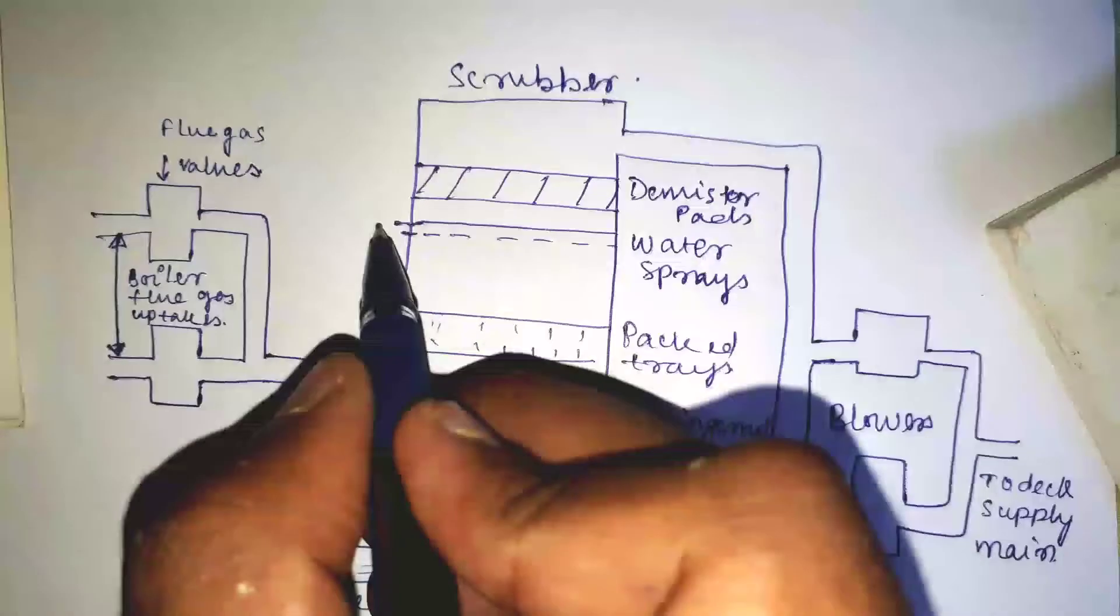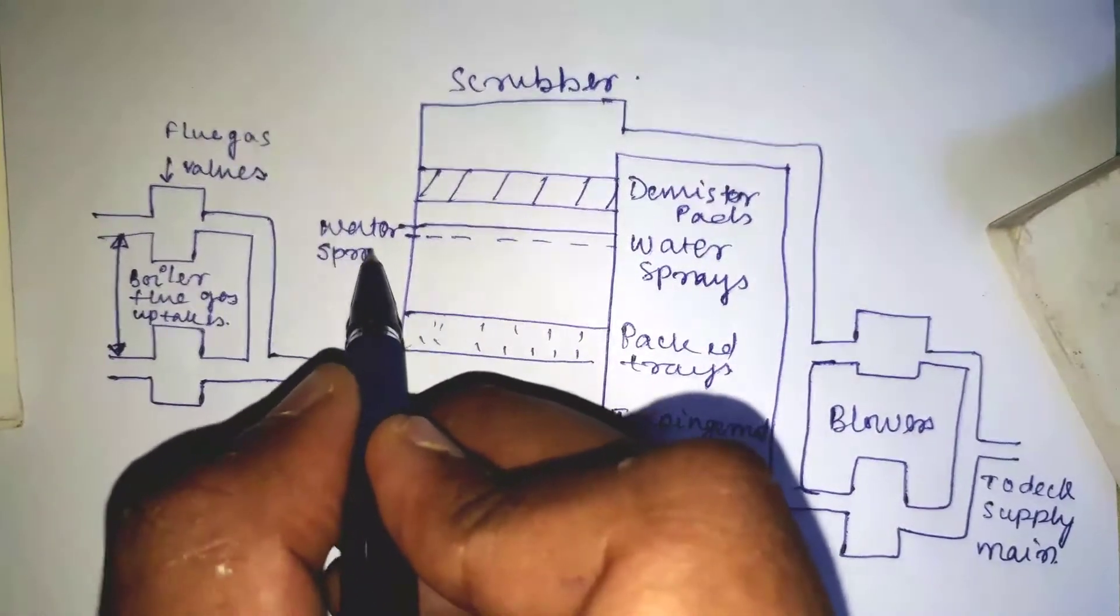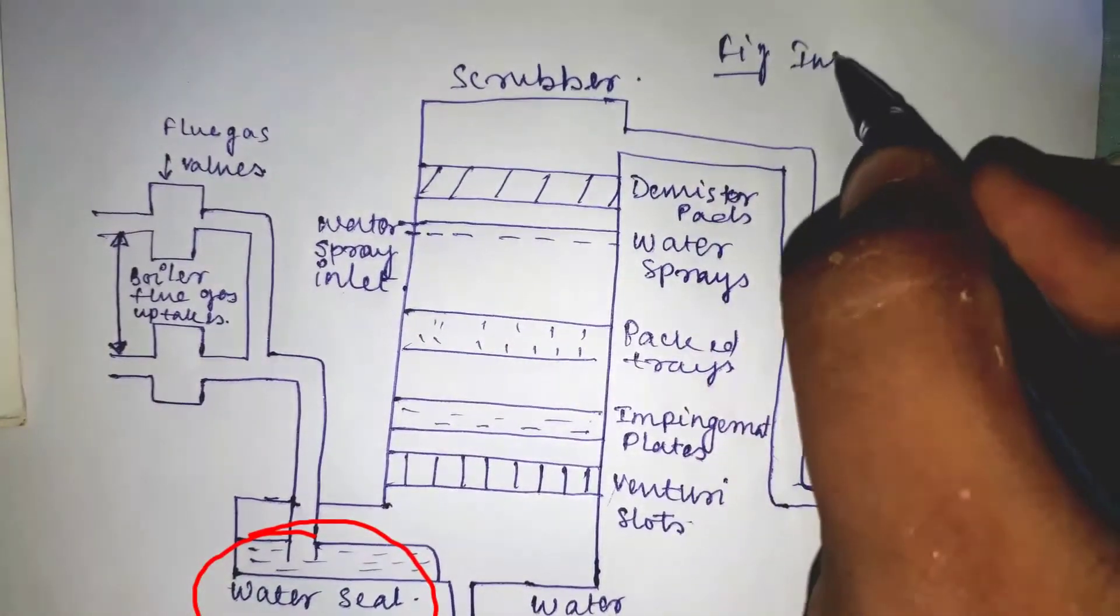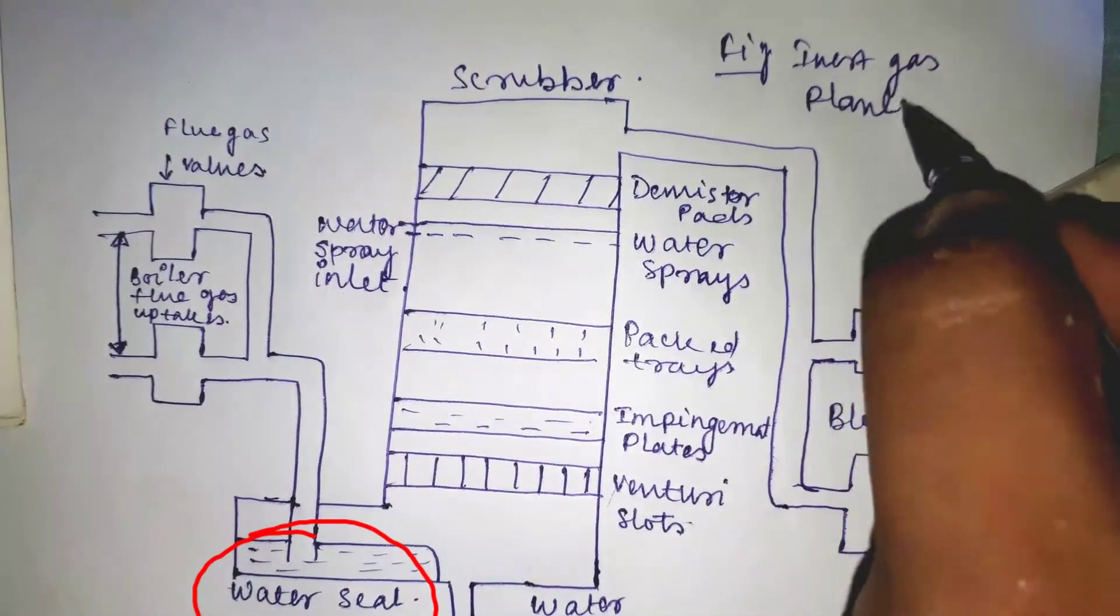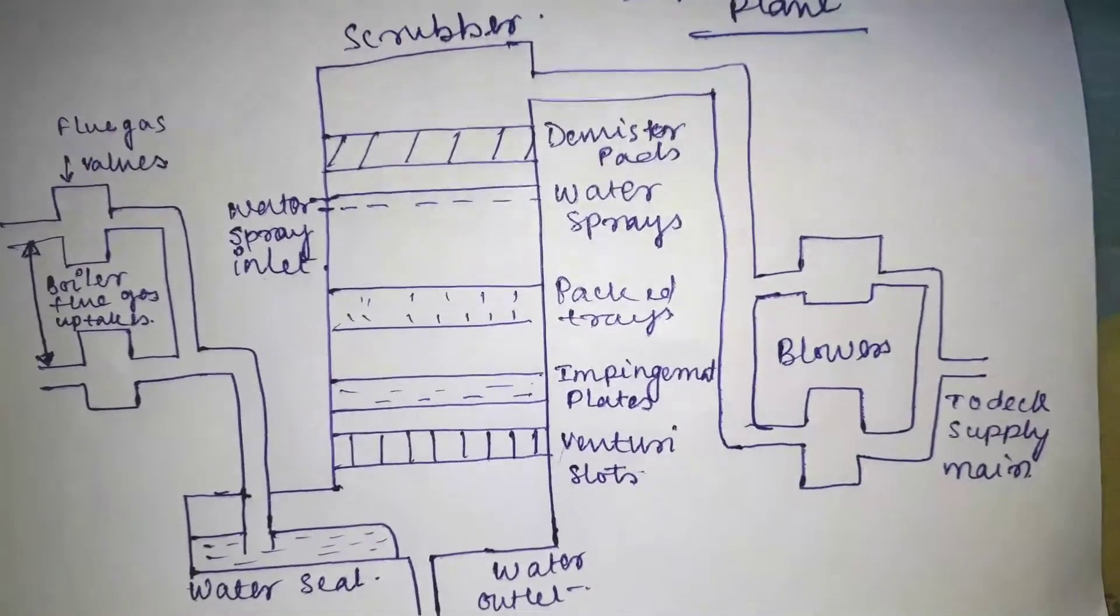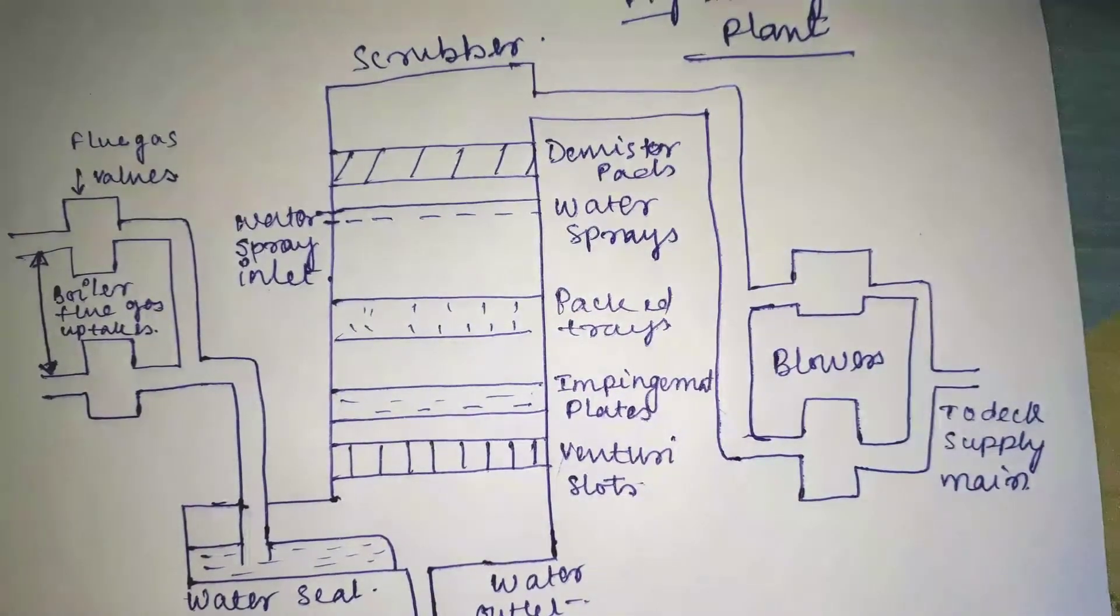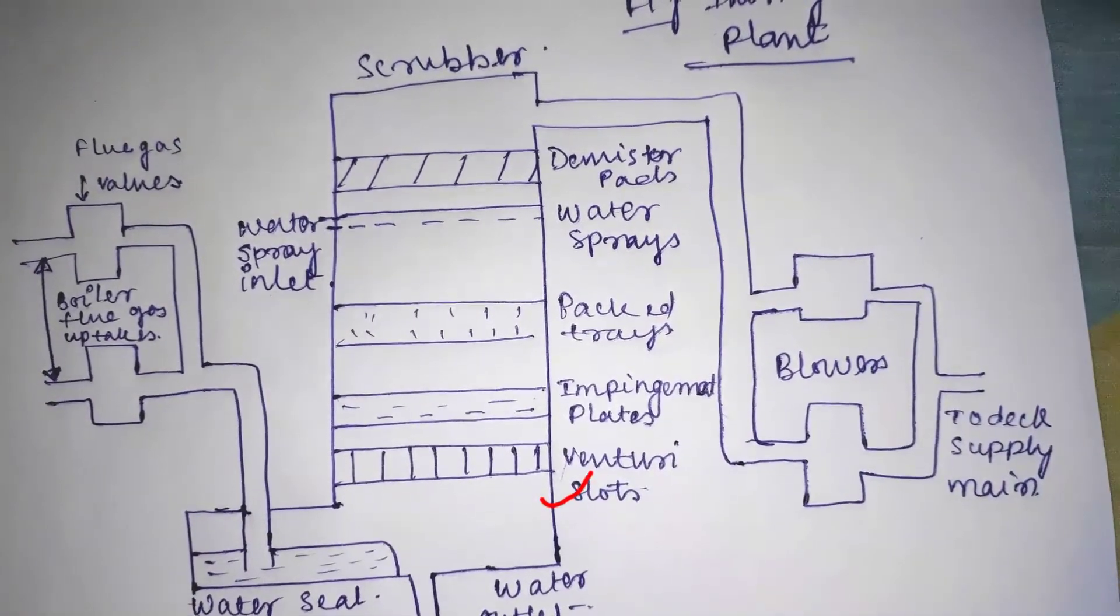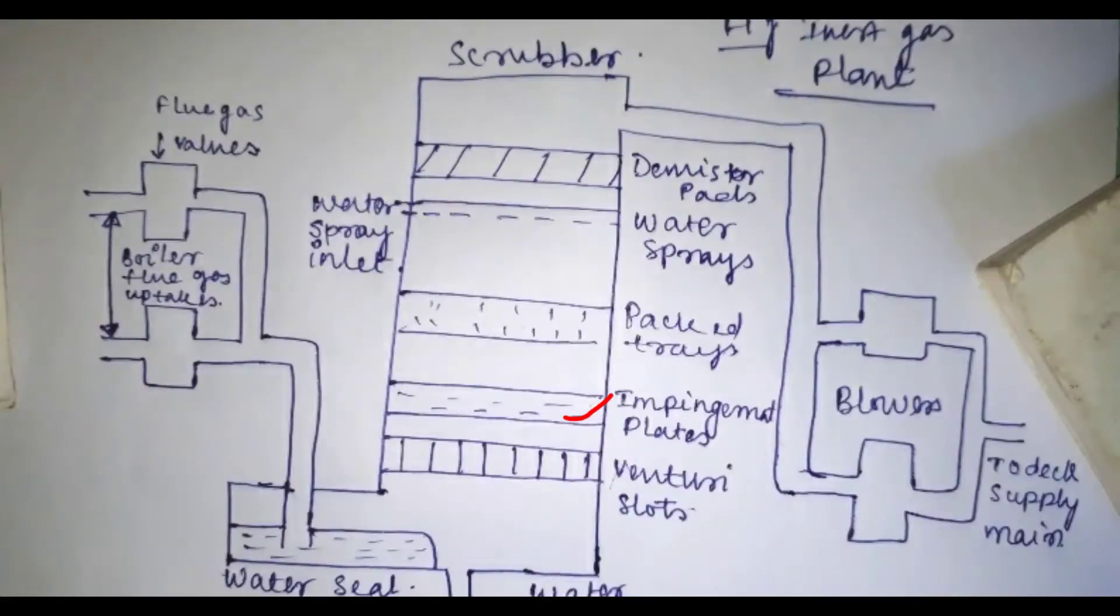Before entering the scrubbing tower, the gas receives an initial cooling by being bubbled through a water seal, as you can see in the figure. The scrubber tower is made up of following components: first is the venturi nozzle in the slotted base, second is the perforated impingement plates, third is the trays of packed stone or plastic chippings.